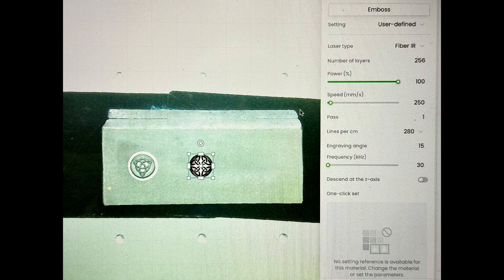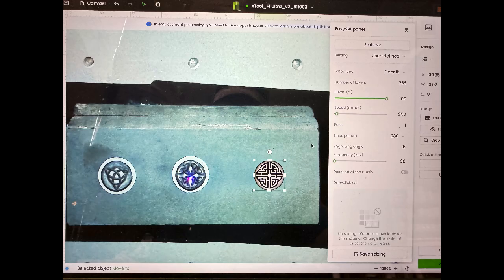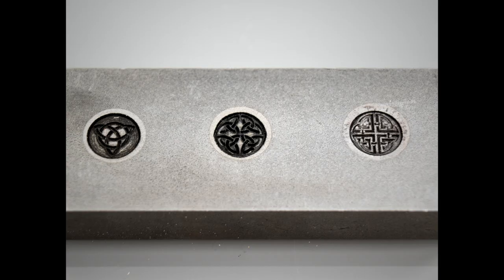So you repeat that for the other two designs, just placing them on your piece of steel where you want them. And you'll notice that I go from 280 to 300 lines per centimeter for resolution.